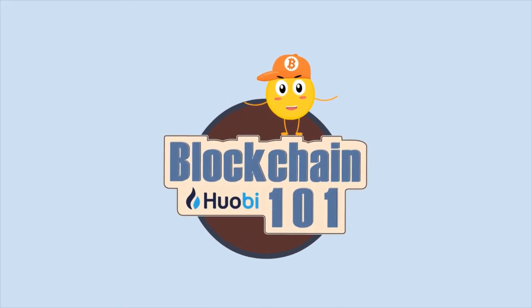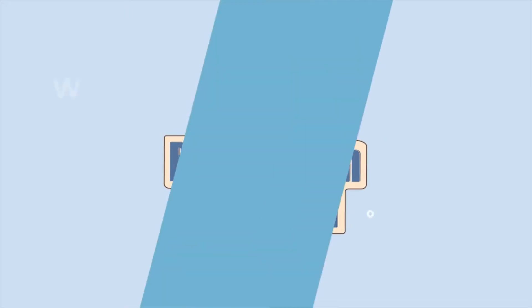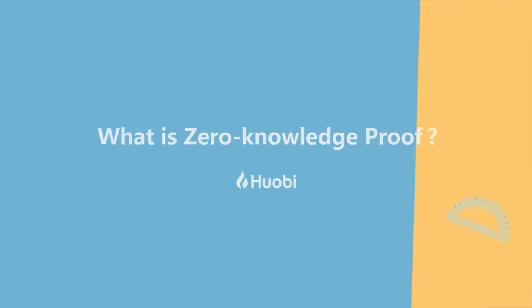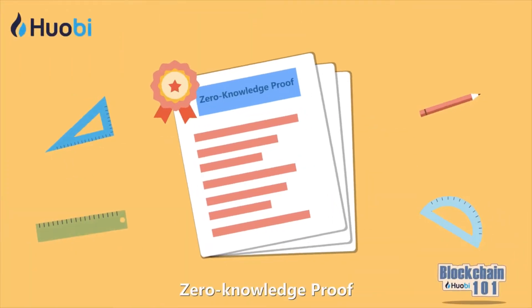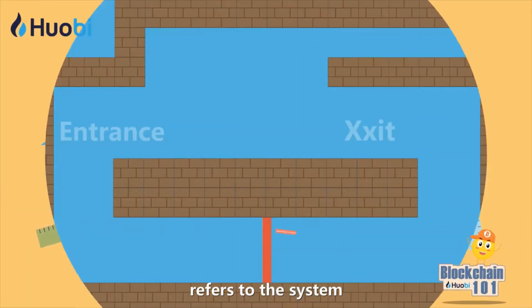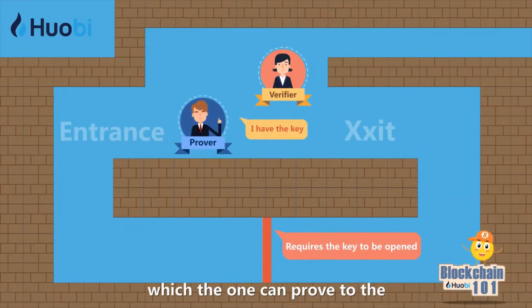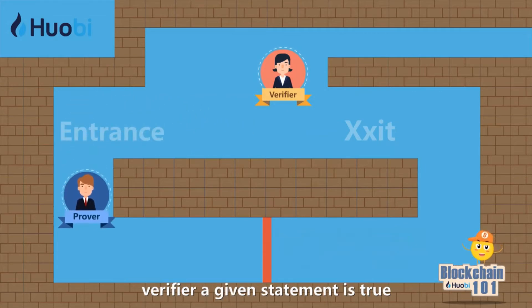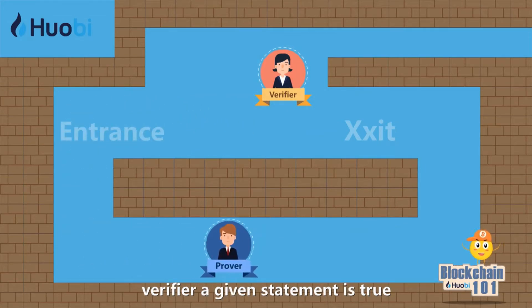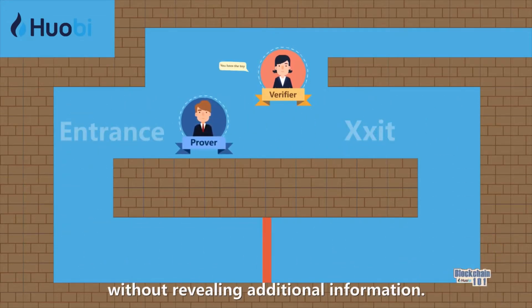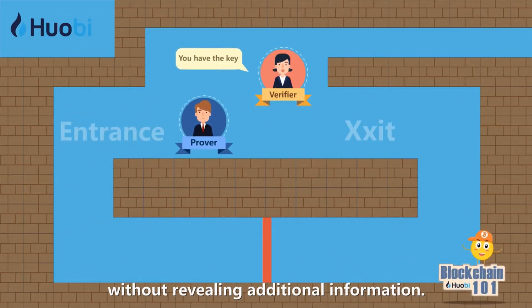One minute a day — Blockchain 101. What is zero knowledge proof? Zero knowledge proof refers to the system by which one can prove to the verifier that a given statement is true, without revealing additional information.